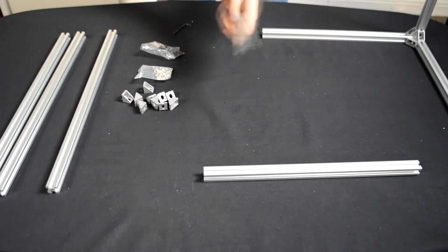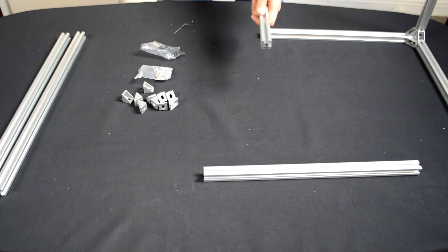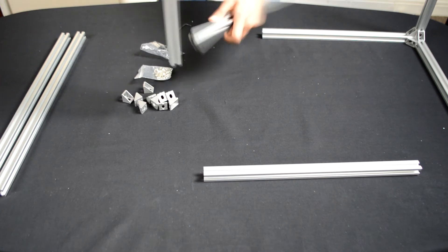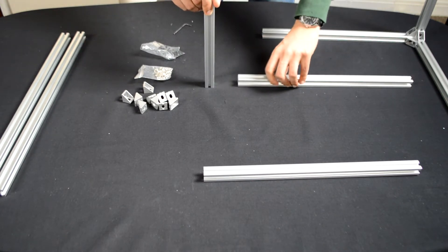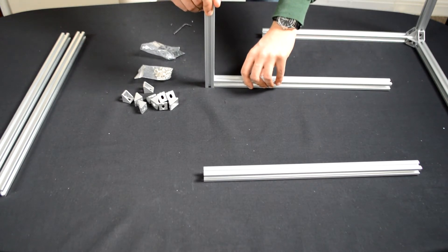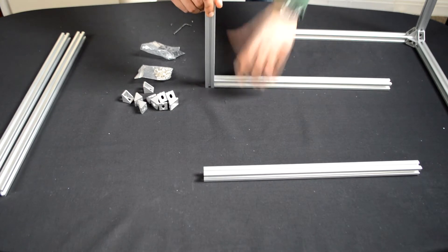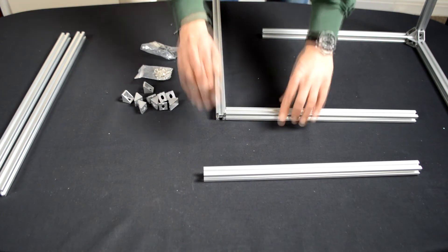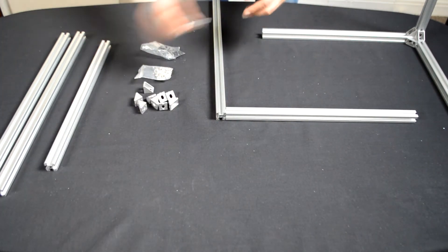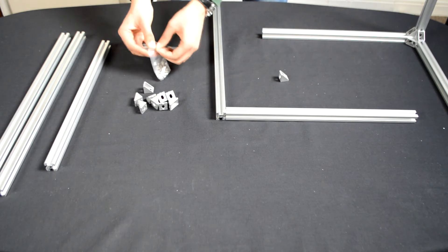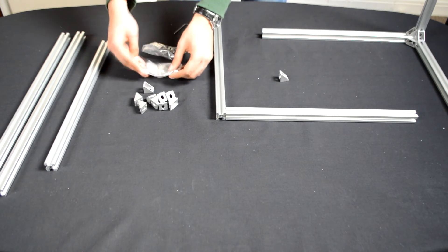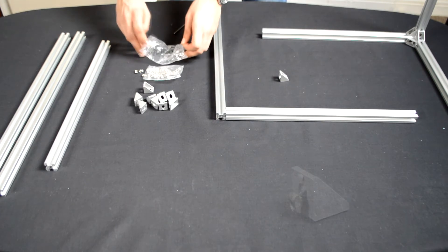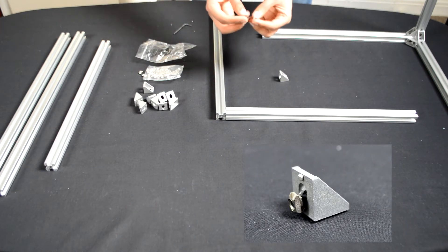So let's do one now. So what we want is to have the 500mm aluminum extrusion standing up and a 400mm aluminum extrusion against it like this. So put this down, take a corner, a nut and bolt.